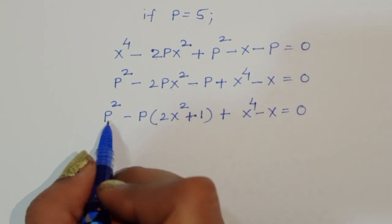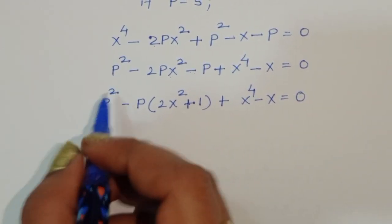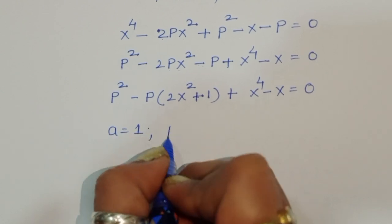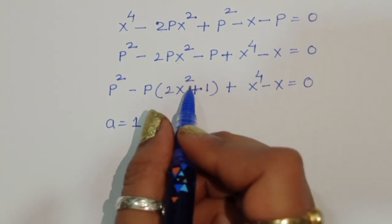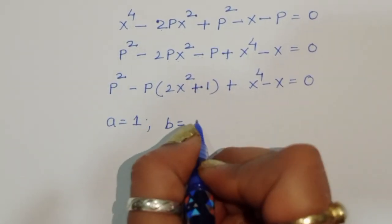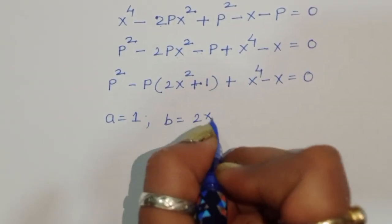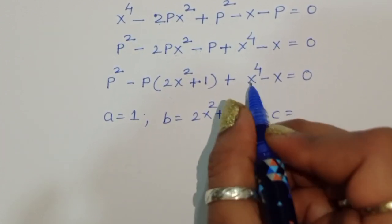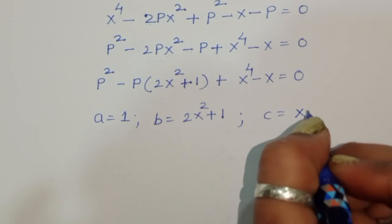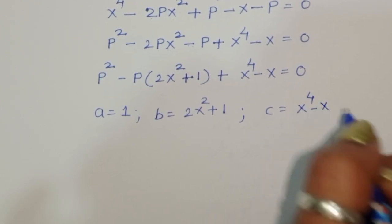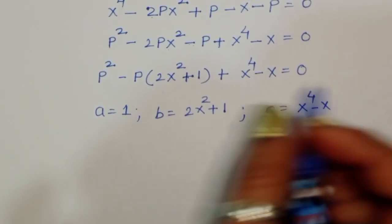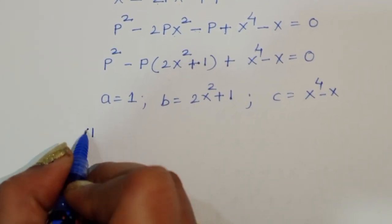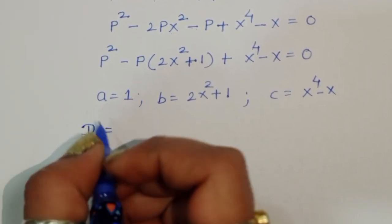Considering this as a quadratic equation in p: a = coefficient of p², so a = 1; b = -(2x² + 1), which is 2x² + 1 in magnitude; and c = x⁴ - x.